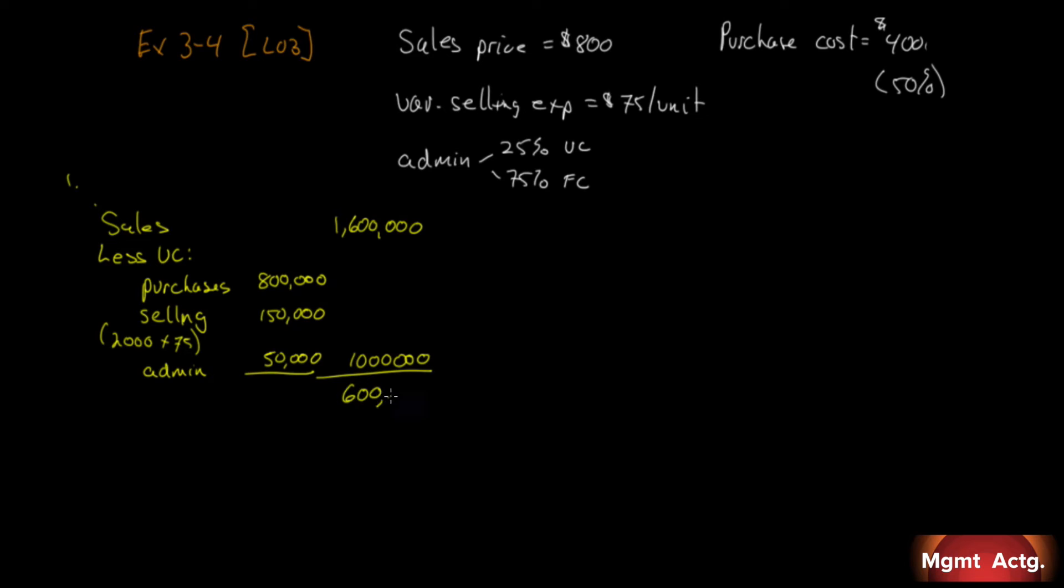Which leaves $600,000. That is our contribution margin. Get used to writing that down every time. Contribution margin - take no shortcuts.